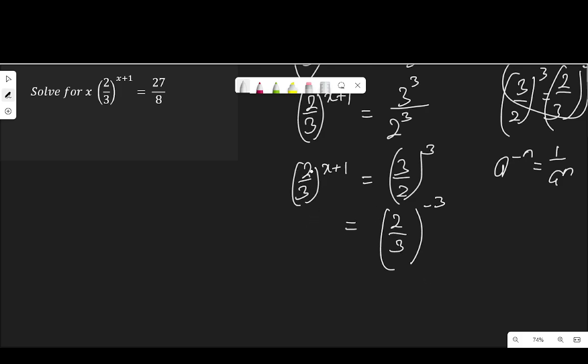That means the fraction on the left hand side, which is 2 over 3 to the power of x plus 1, is equal to 2 over 3 to the power of negative 3. Can see now that the bases are the same. Here I have 2 over 3, here 2 over 3, so I can equate the powers.